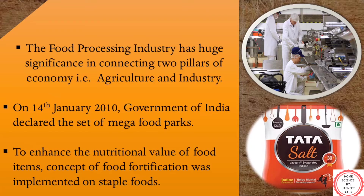By 30th June 2017, there were nine mega food parks which were fully functional. The major purpose was to improve the nutritional value of our staple food. Since most cereals are deficient in certain nutrients, leading to deficiency diseases, food fortification is done by adding nutrients that are lacking in foodstuffs or condiments to ensure minimum dietary requirements are met. Some examples are iodized salt, folic acid added to flour, and vitamin A added to oils.